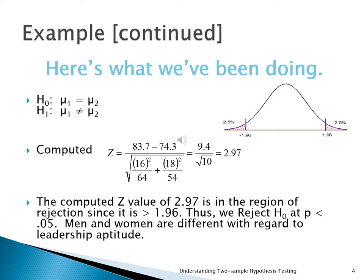Here we got 2.97, which is clearly more than 1.96. So we say we reject H₀ at a probability of 0.05. In other words, we have found that men and women are different with regard to leadership aptitude.